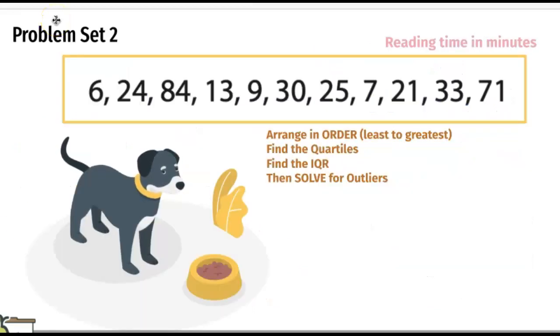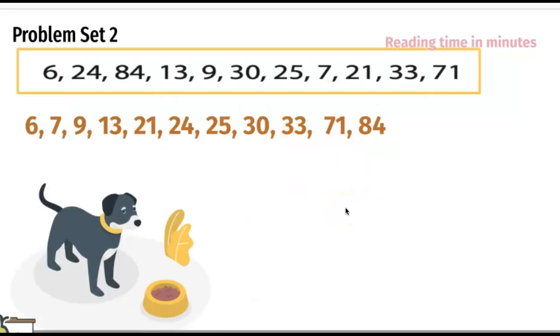Problem set number two. This is our set of numbers, reading time in minutes. First thing we should do: arrange in order from least to the greatest, then finding all those informations. We have rearranged them in order. Let's find the quartiles. Let's check how many numbers are there. One, two, three, four, five, six, seven, eight, nine, ten, eleven. There are eleven numbers in the set of data, so our middle or median is the sixth number. So 24 is going to be our median, that's our Q2.